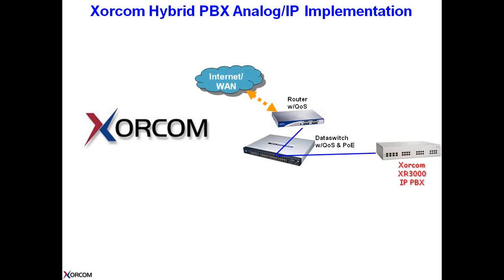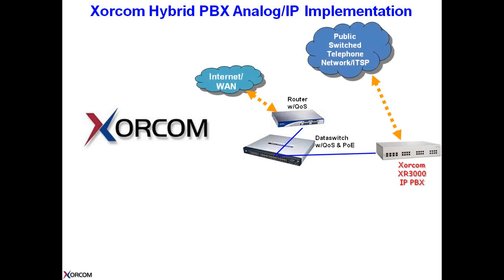The router connects to the internet, and it does its job in providing internet access to the computers and the network. The telephone system connects to the telephone service provider through the Public Switch Telephone Network, or the PSTN, and connects through either analog telephone lines or T1 or E1 if you're outside of the United States of America.